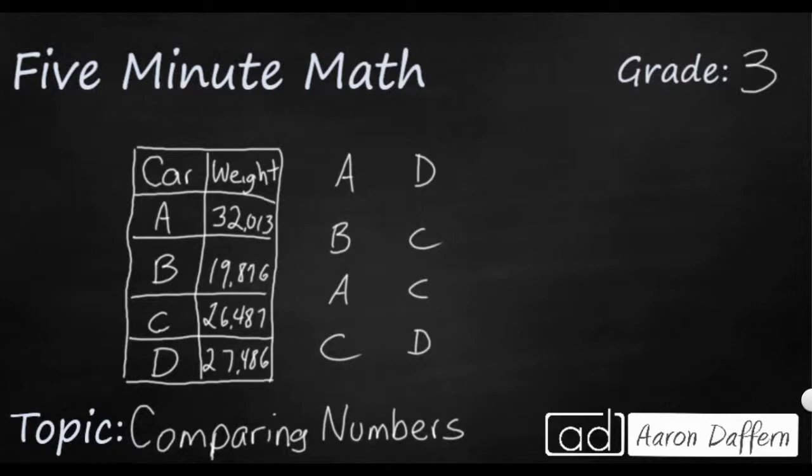So we have a little table over here and there are four different cars and the weights are given to us in pounds ranging from 32,013 down to 19,876. So we've got four different comparisons here that we're going to need to look at. We need to compare car A and D, B and C, A and C, and C and D.